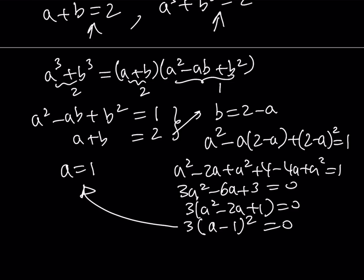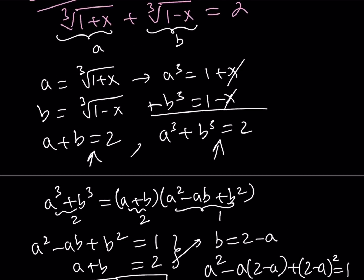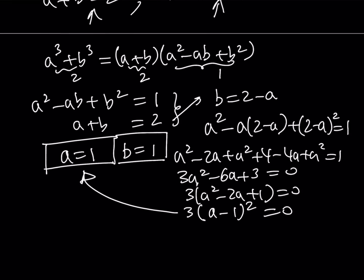But again, we're not looking for A, we're looking for X. So, how do you find X from here? Well, if A is equal to 1, that implies that B is also equal to 1 because A plus B is equal to 2. And then now, let's go back and back-substitute.